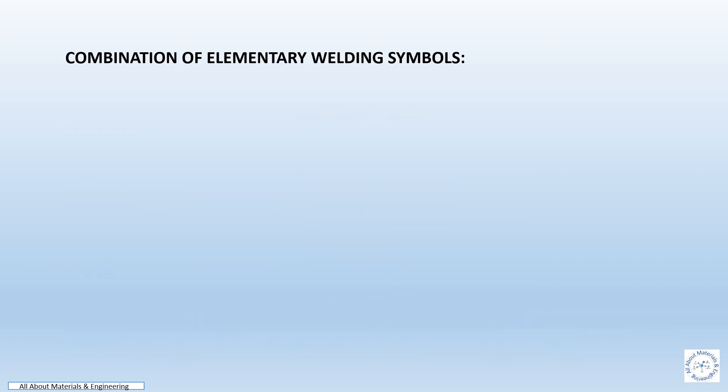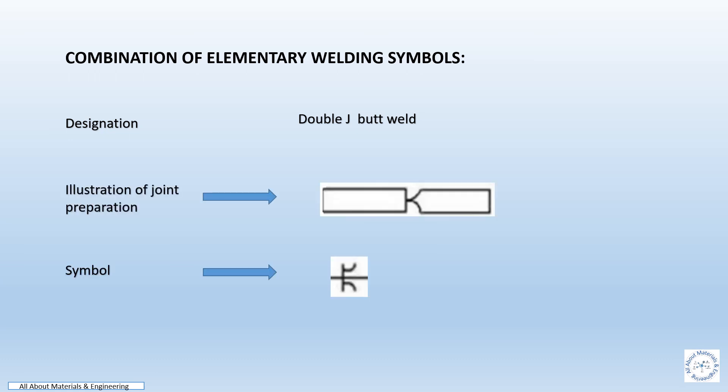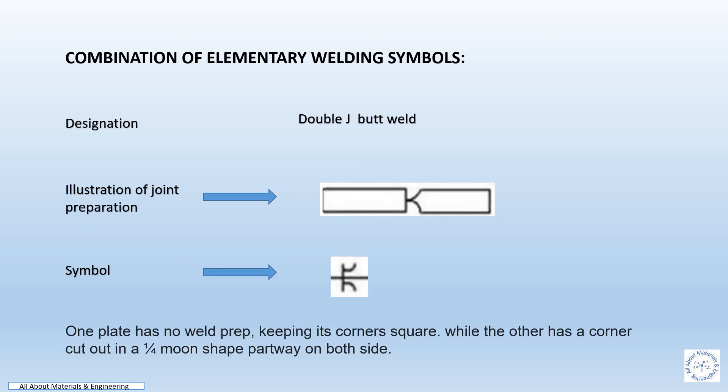Combination of elementary weld symbols for double J butt weld. The sketch represents the illustration of the joint preparation and the symbol to be represented in the drawing. One plate has a weld preparation keeping its corner square, while the other corner has a one-quarter moon plate pathway on both sides.